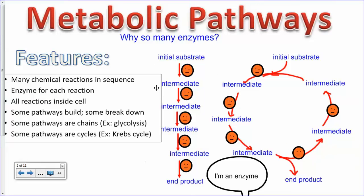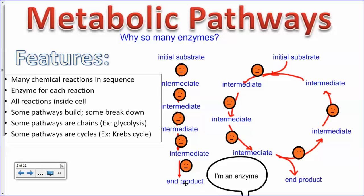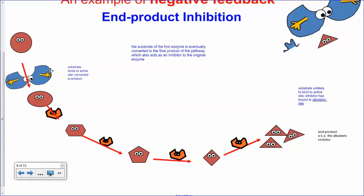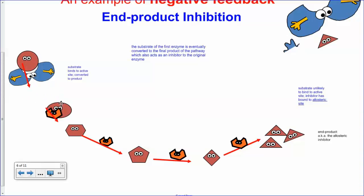Many metabolic pathways can be chains or cycles — like glycolysis or the Krebs cycle — this is normal in biology. Each step in the chain is worked on by one enzyme, starting with one substrate which gets turned into a product, and that product becomes the substrate of the next reaction, and so on, until you end up with an end product. This end product can be very useful.